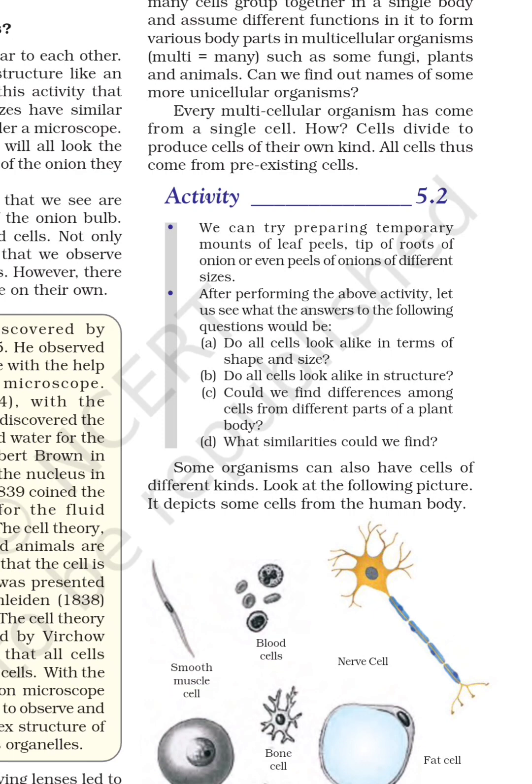In our body, there are different types of cells with different shapes. As shown in figure 5.3, some are round, some are long. Nerve cells are shown in yellow. Blood cells — some are large, some are flat. Different cells have different shapes.